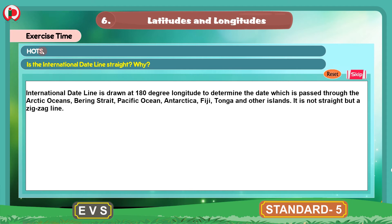The next section is HOT. The question is: Is the international date line straight? Why? The international date line is drawn at 180 degree longitude to determine the date. It passes through the Arctic Ocean, Bering Strait, Pacific Ocean, Antarctica, Fiji, Tonga, and other islands. It is not straight but a zig-zag line.